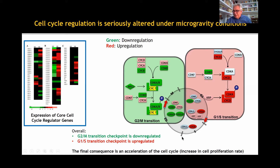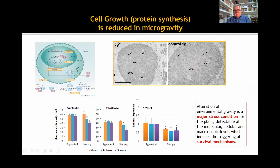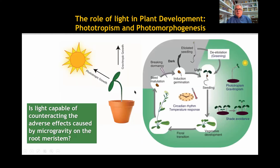Microgravity produces an acceleration of the cell cycle and an increase of the proliferation rate. At the same time, cell growth is depleted, as shown by changes in the levels of nuclear proteins and in the expression of genes regulating the production of ribosomes. The hypothesis of this work was to test whether or not light is able to counteract the adverse effects produced by microgravity on meristematic cells.